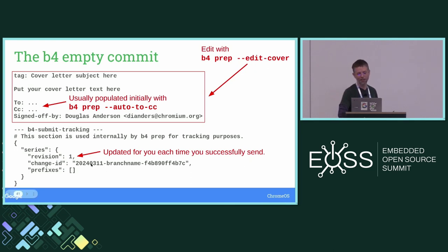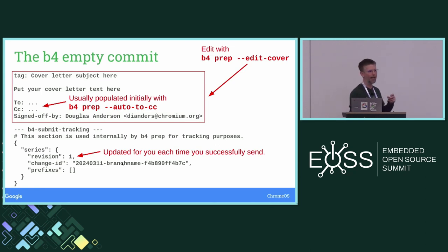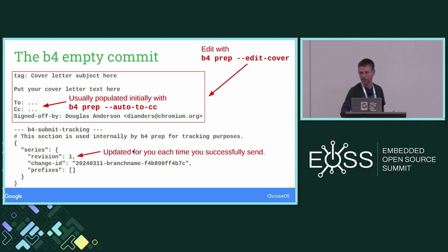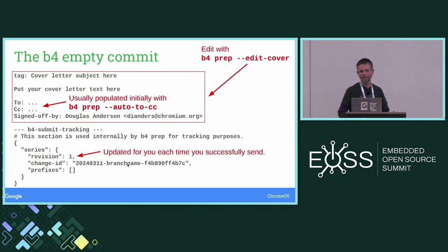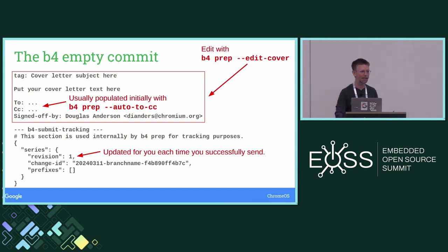B4 has an opposite confusion compared to Patman. If you're sending a single patch with B4, you've got this weird thing where it says 'please put your cover letter here' — but it's not really a cover letter. If you add text there, it ends up after the cut for that one commit. The subject line of this non-cover-letter is ignored. So there's confusion in both approaches — with Patman you sprinkle tags everywhere, with B4 it's all centralized but the single-patch case is awkward.